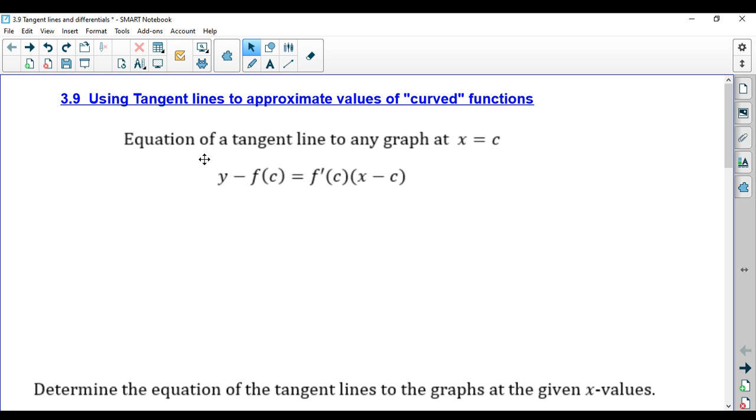So first of all, the equation of a tangent line to any graph at x equals c is this. And you may recall that's just the point slope form of a line, which was y minus y1 equals m times x minus x1.